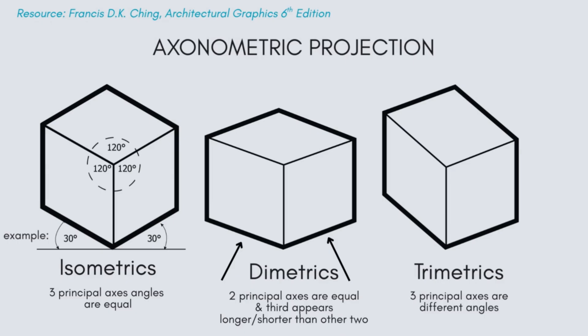A diametric projection is an axonometric projection in which two of the principal axes are equally foreshortened and the third appears longer or shorter than the other two. It might be confusing at first, but don't worry, I'll walk you through a few practice examples. In a trimetric drawing, all three axes are at different angles and foreshortened differently. This gives the most realistic result but is also the most complex to draw.